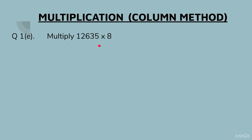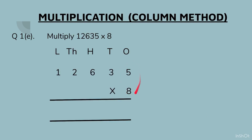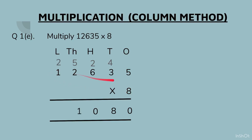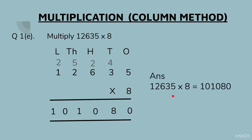Part (e): 12635 × 8. Write the place values and the question below it. Starting with the ones column: 8 fives are 40 — write 4 at the top and 0 at the bottom. 8 threes are 24, plus 4 gives 28 — write 2 at the top and 8 at the bottom. 8 sixes are 48, plus 2 gives 50 — write 5 at the top and 0 at the bottom. 8 twos are 16, plus 5 gives 21 — write 2 at the top and 1 at the bottom. 8 ones are 8, plus 2 gives 10. Answer: 12635 × 8 = 101,080.